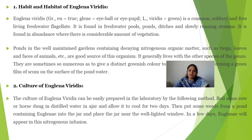Euglena viridis is solitary, free-living, freshwater flagellate. It is found in freshwater ponds, ditches, and slowly running streams. It is found in abundance where there is a considerable amount of vegetation.